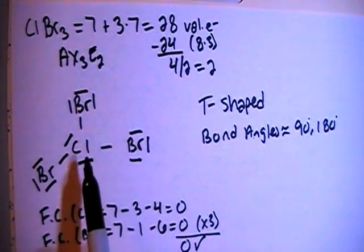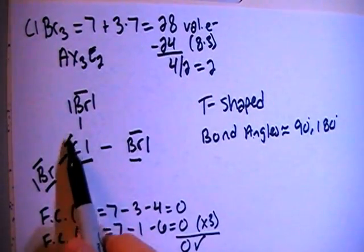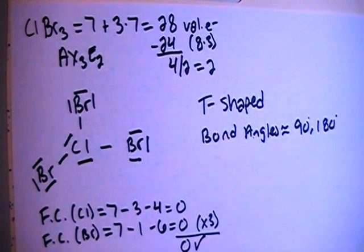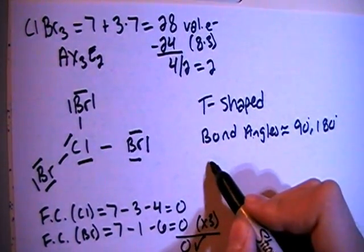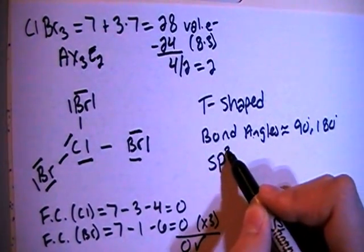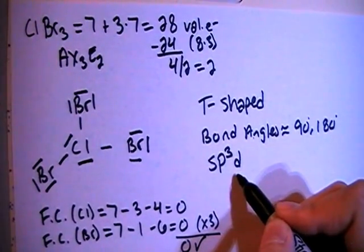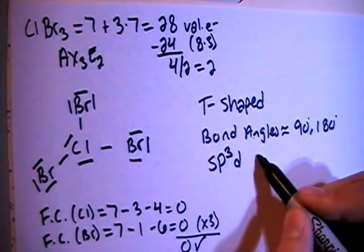In terms of hybridization, looking at the central chlorine atom, there's 1, 2, 3, 4, 5 electron groups, or 5 possible bonding sites. So we need 5 orbitals, so S, P, 3, D, so 1 S, 3 P, and 1 D. That's 5 orbitals total, so sp3d hybrid.